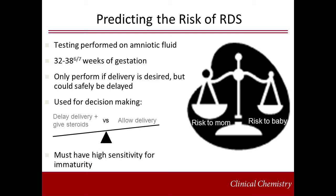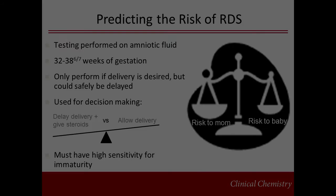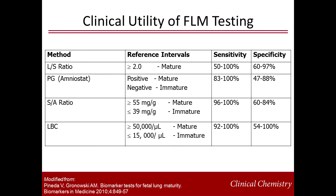As a screening tool, these tests must have high sensitivity to detect RDS so that infants are not inappropriately delivered only to develop respiratory distress. This slide illustrates the most commonly used laboratory tests for assessing FLM and their clinical utility. We will briefly discuss each of these tests separately. The LS ratio was the first biochemical test for assessing fetal lung maturity. For many years it was considered the gold standard. However, it actually has lower clinical sensitivity than more modern methods such as lamellar body count, or LBC.